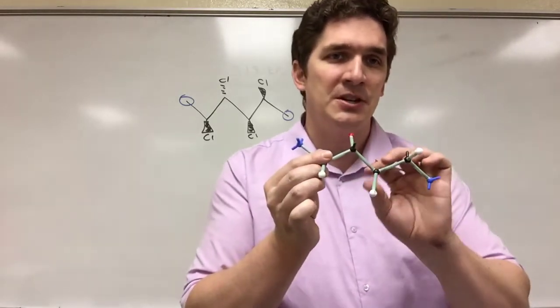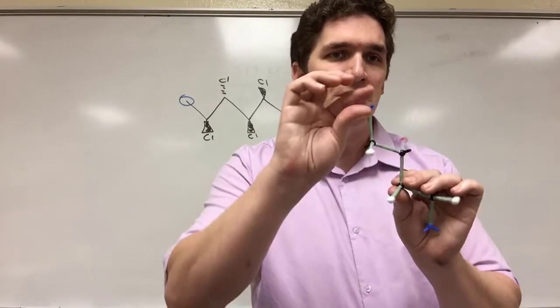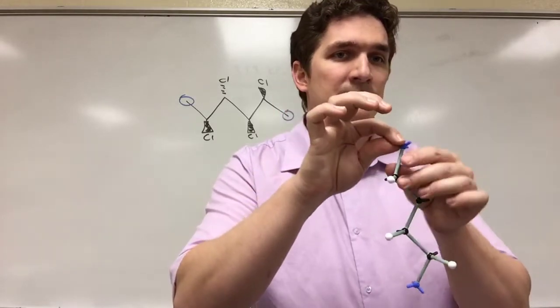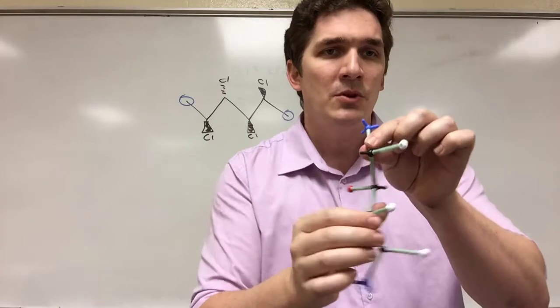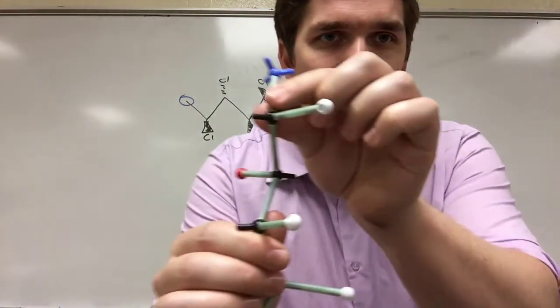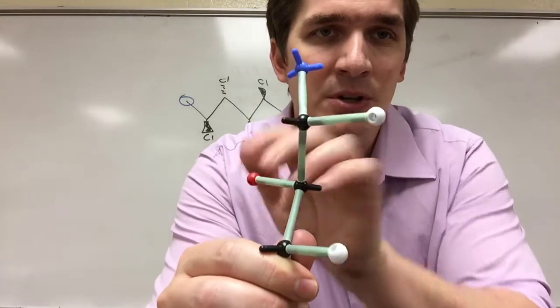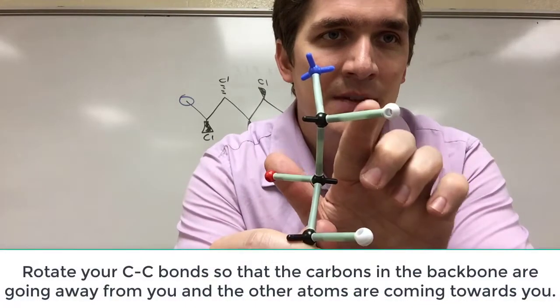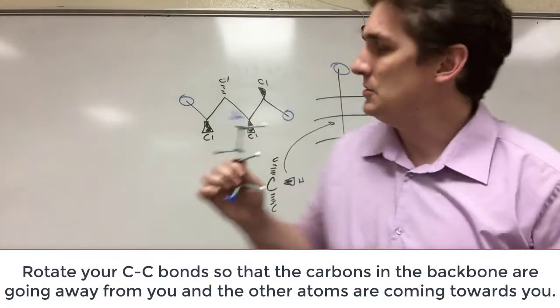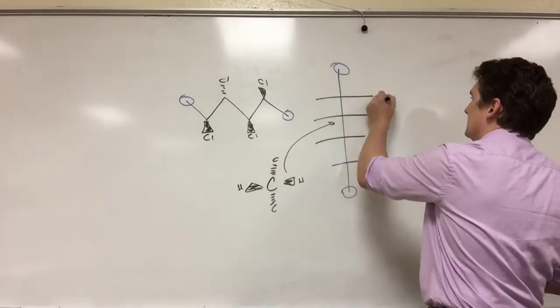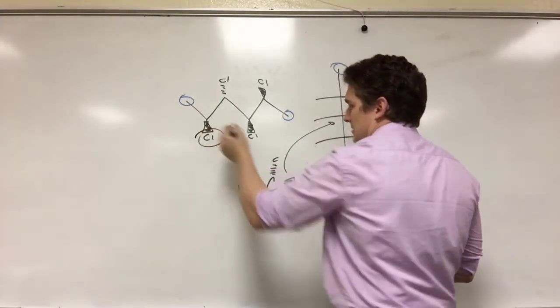So in order to figure out the Fisher Projection, what we need to do is we need to start with a carbon. We'll pick a top carbon. And we want to rotate this molecule in such a way that we've got a carbon going away from you and we're looking between the two other bonds. So in this case, I've got the chlorine going to the right, and that'll be this chlorine.